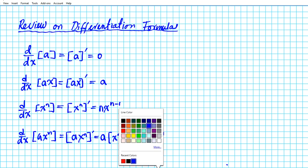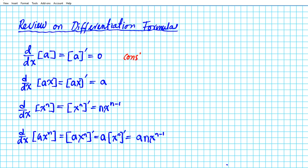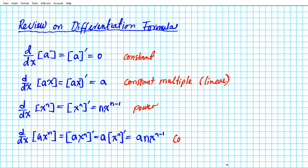Just to write down the names: the first is the constant rule, the second is the constant multiple rule in the linear case, the third is the power rule, and the fourth is the constant multiple rule for a power — because you multiply the constant by a power but it's not linear, it's just the power case. The constant multiple rule is basically the derivative of a function multiplied by a constant.